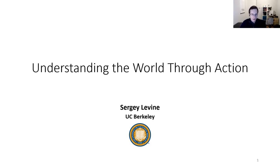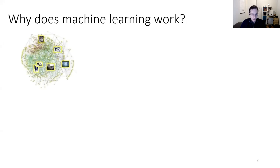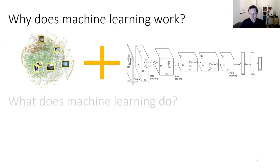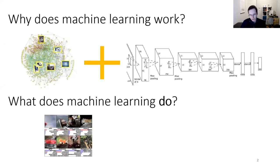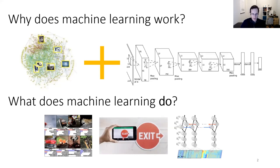Thank you for the introduction. I'll get started — feel free to ask questions during the talk, it's a smaller group so we can have more discussion. Here's a big question to start: why does machine learning work well? At a high level, the most successful ML systems are predicated on two central ingredients: the ability to utilize large and diverse datasets, and large, high-capacity models. These models solve tasks like recognizing objects in images, translating text, and recognizing speech — things that look like recognition or prediction problems.